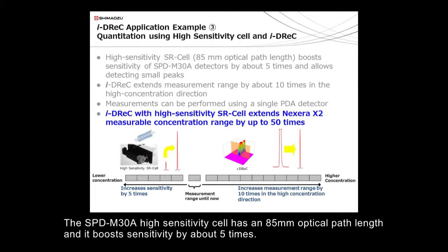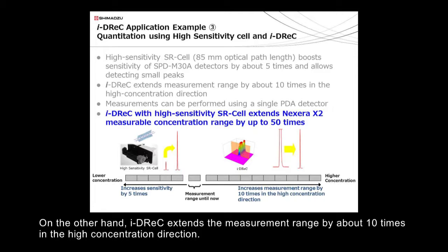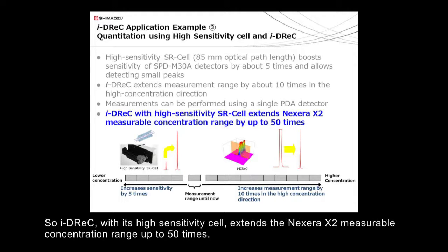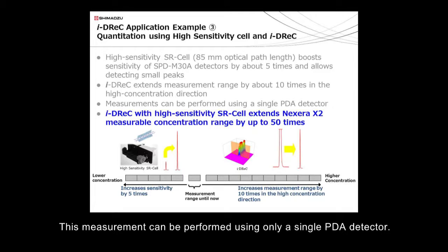The SPD-M30A high-sensitivity cell has an 85 mm optical path length and it boosts sensitivity by about 5 times. On the other hand, iDREC extends the measurement range by about 10 times in the high concentration direction. So iDREC, with its high-sensitivity cell, extends the Nexera X2 measurable concentration range up to 50 times. This measurement can be performed using only a single PDA detector.